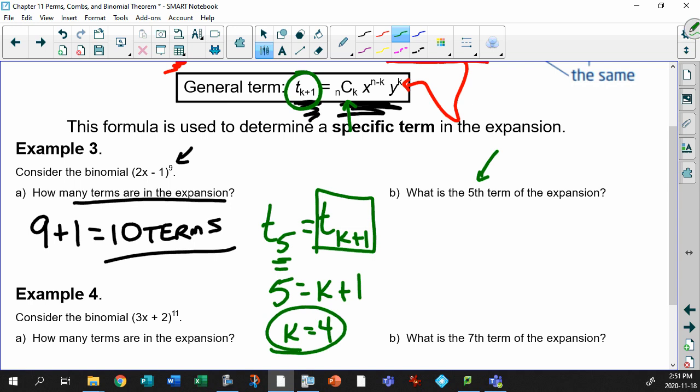Let's find the fifth term. n, of course, is going to be 9. Choose k, of course, is going to be, you just figured it out, 4. Right? This is x. x is 2x. 2x to the power of, right there, 9 minus 4. That's going to be 5. Your b term, or your y term, here, let's clean this up because I can't see it. Oh, it's just minus 1. So this is minus 1. And don't forget, it always matches with this guy. To the power of 4.